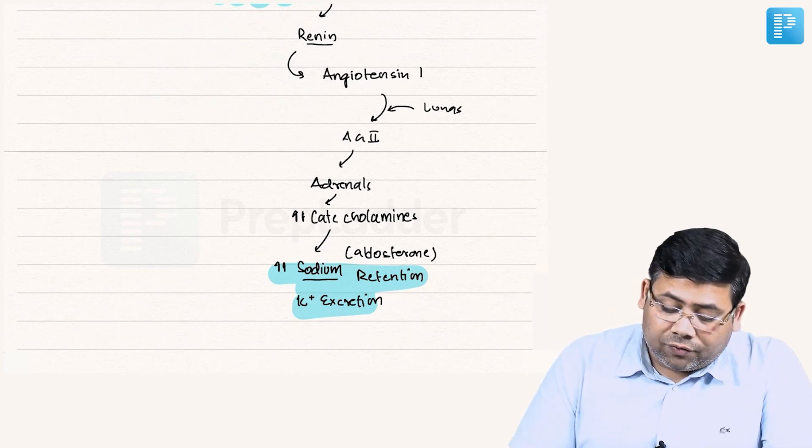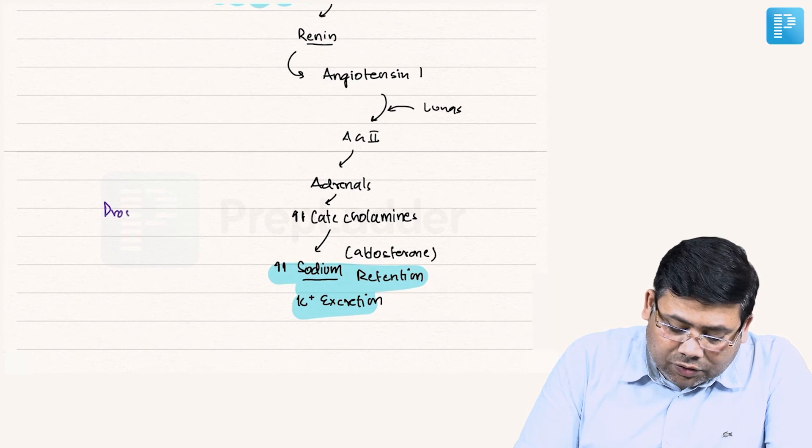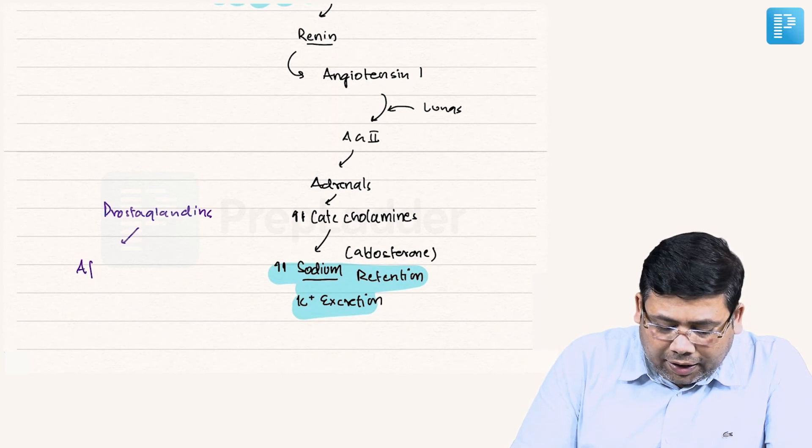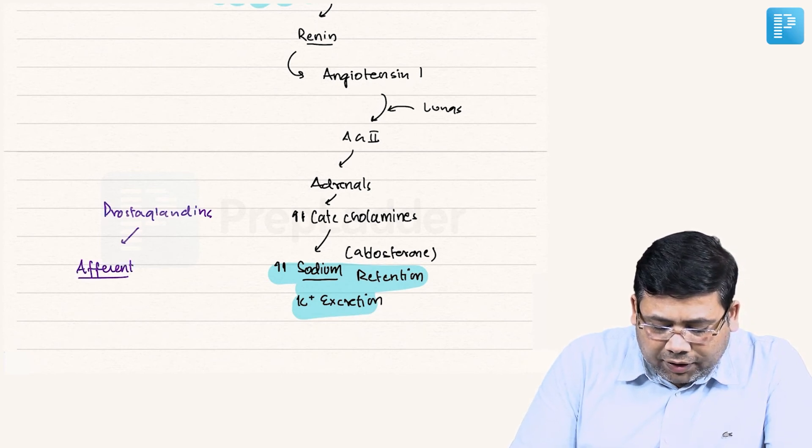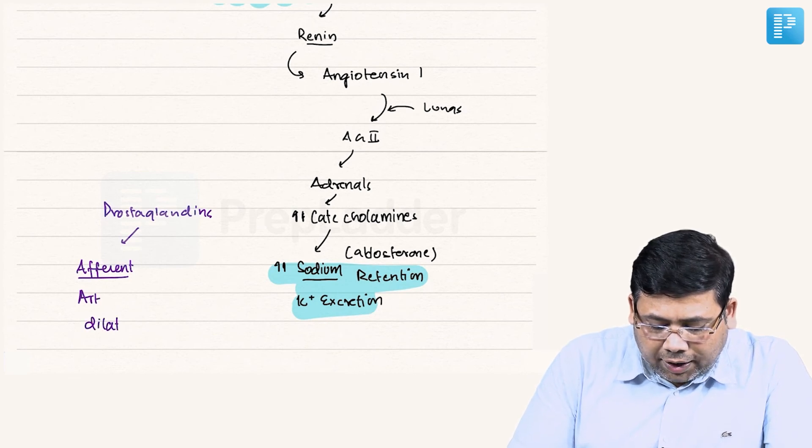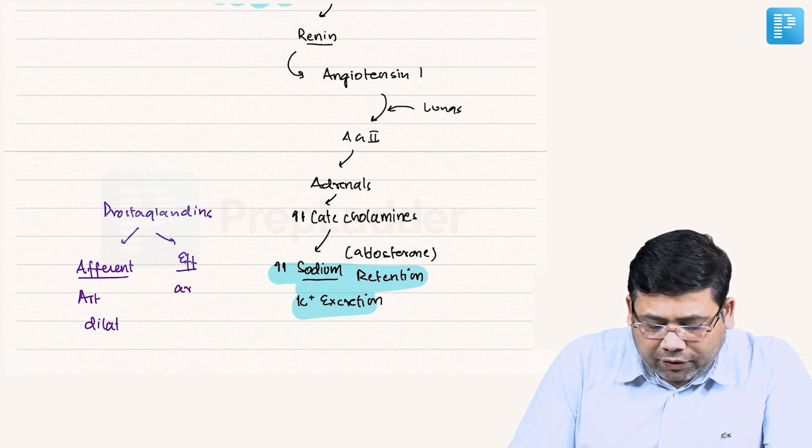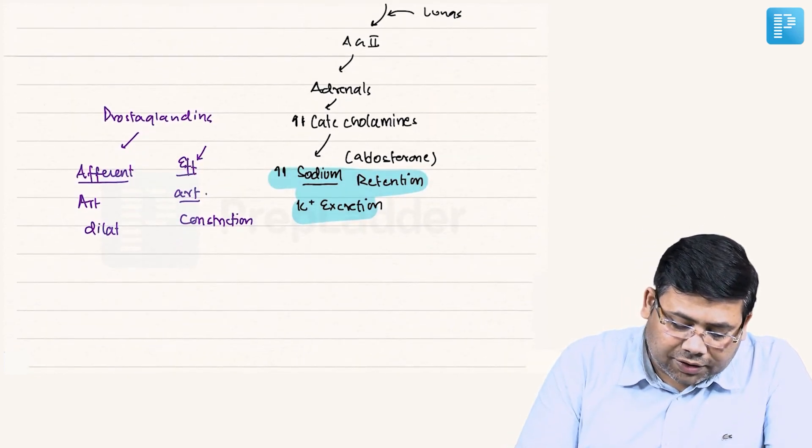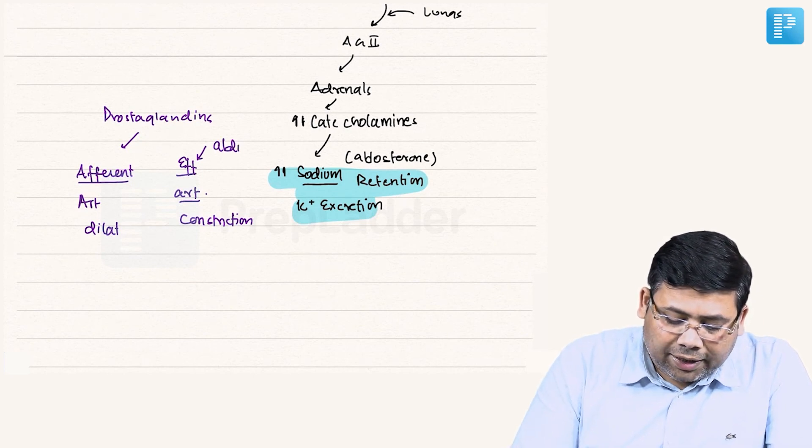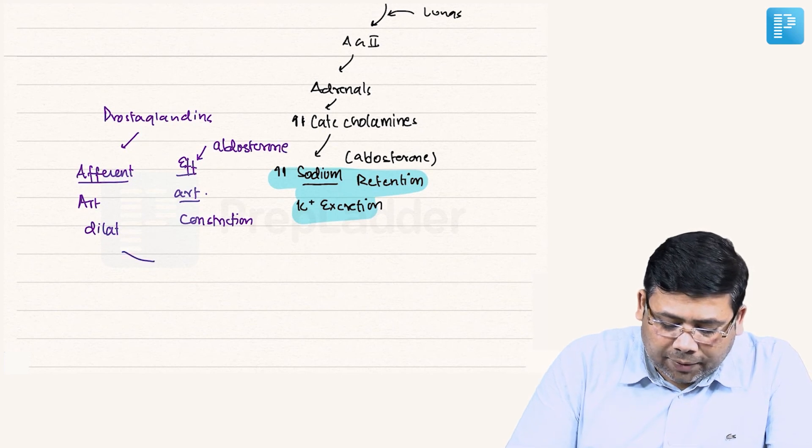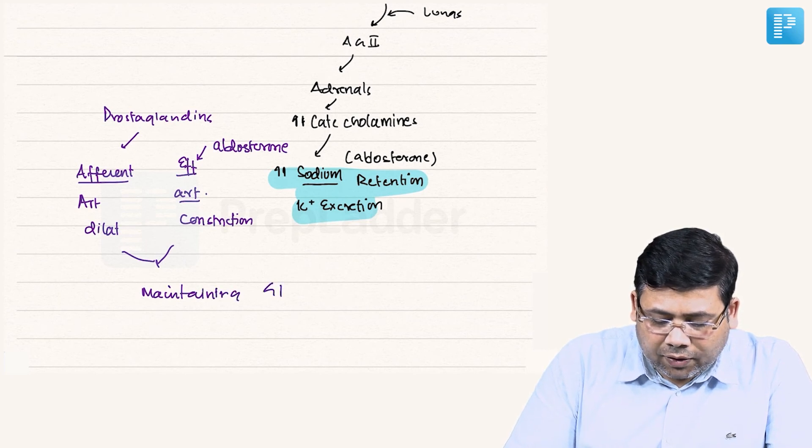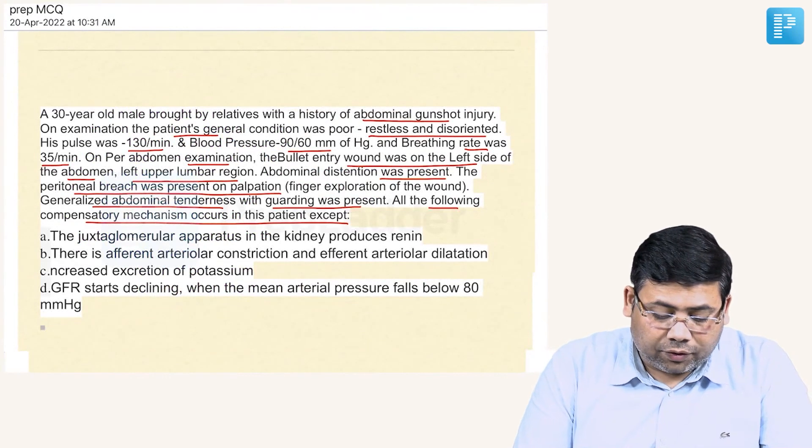The second important thing is prostaglandins are involved. Prostaglandins result in afferent arteriole dilatation and efferent arteriole constriction. This is how they maintain GFR. The aldosterone and prostaglandins help to maintain the GFR. Now if we go to the question: the juxtaglomerular apparatus of the kidney produces renin, this is absolutely true. There is increased excretion of potassium, absolutely true.